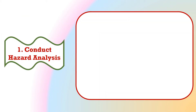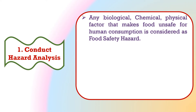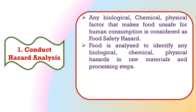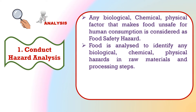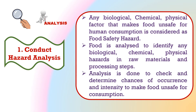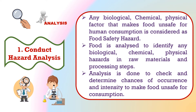The first important principle of HACCP is to conduct hazard analysis. Hazard means any physical, chemical or biological factor that makes food unsafe for human consumption. Here the food is analyzed to identify any biological, chemical or physical hazard in raw materials and processing steps. This analysis is done to check and determine chances of occurrence and intensity to make food unsafe for human consumption.